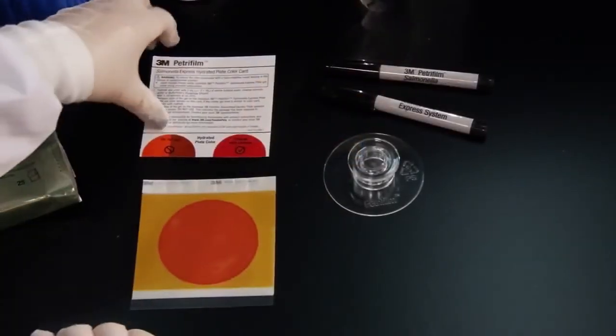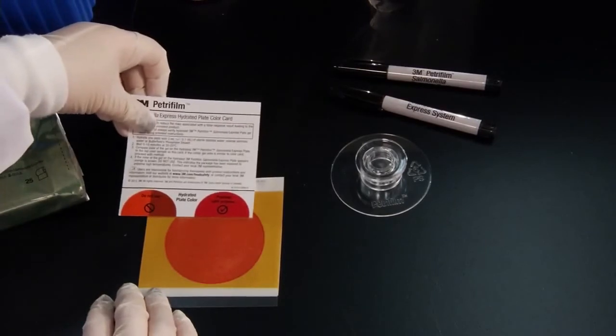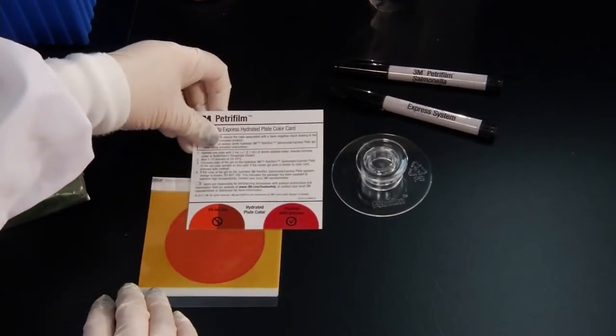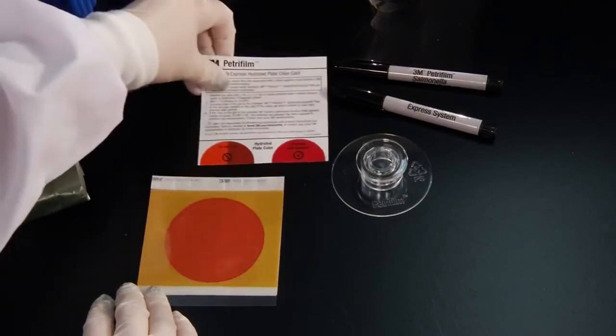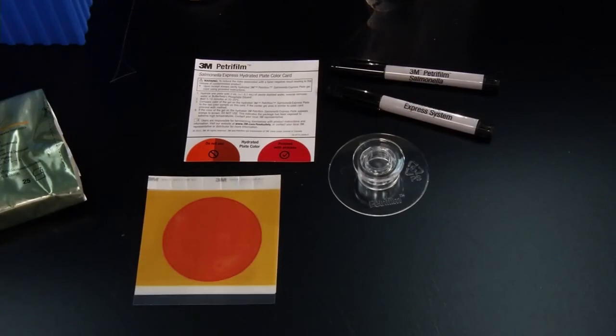After a few minutes, check the hydrated plate gel color using the 3M Petrifilm Salmonella Express Hydrated Plate Color Card. If the gel color is red, the plates are good to use. If the gel color is orange to brown, the plates have been exposed to extreme high temperatures and product performance may be impacted. Do not use the plates, and contact your local 3M food safety representative.